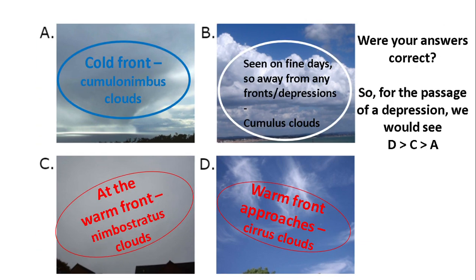Here are the answers. We would see high level cirrus clouds first as the warm front approaches (D). Then at the warm front we'll see nimbostratus clouds (C). Then at the cold front, cumulonimbus clouds (A). Some cumulus clouds may follow (B), but cumulus is certainly seen away from any fronts as well, because we see cumulus clouds on fine days too.